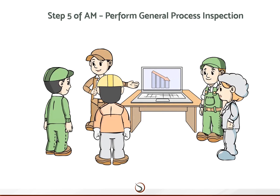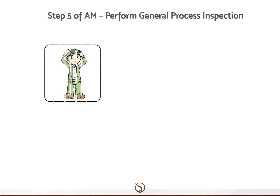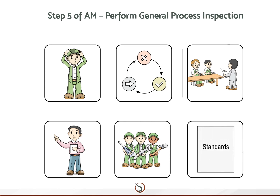In step five, general process inspection, operators are trained in process inspection based upon specific losses identified. The output of the step is the creation of tentative standards covering three aspects: correct operation, correct adjustment and setting, and correct handling of abnormalities. The defined method for the approach is: identification of human error losses; agree expected standards with process engineering; process engineering team train the operators; tagging exercise undertaken by the operators; corrective actions taken by maintenance or operators; update standards.